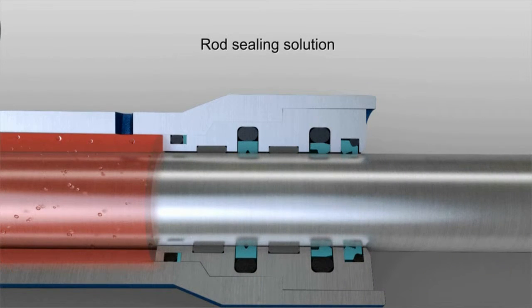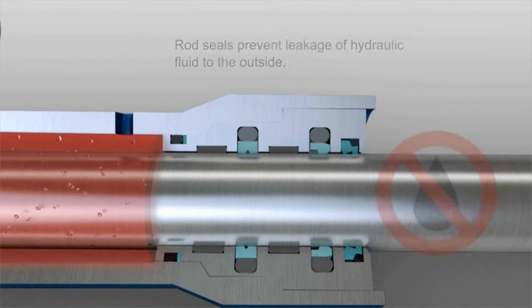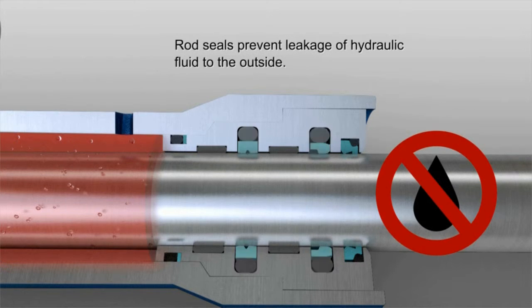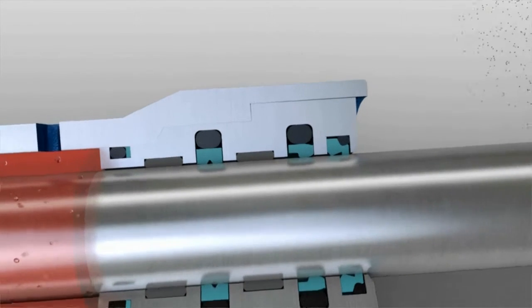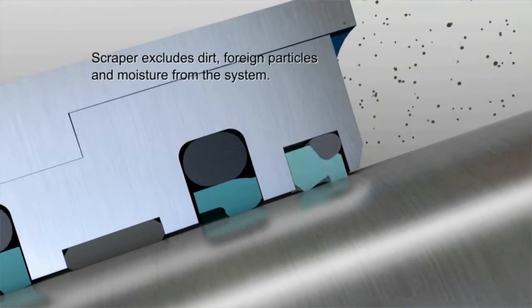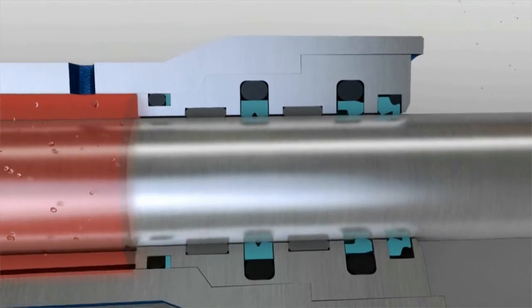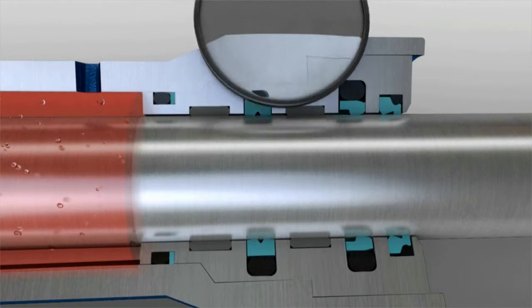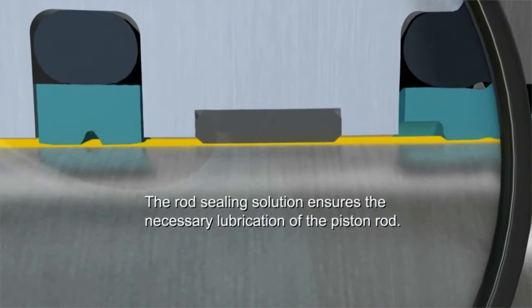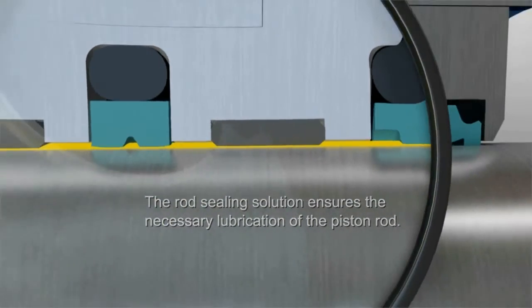The rod sealing solution prevents leakage of hydraulic fluid from the cylinder to the outside. A scraper excludes dirt, foreign particles, and moisture from the system. The rod seal also ensures there is sufficient lubrication for the piston rod.